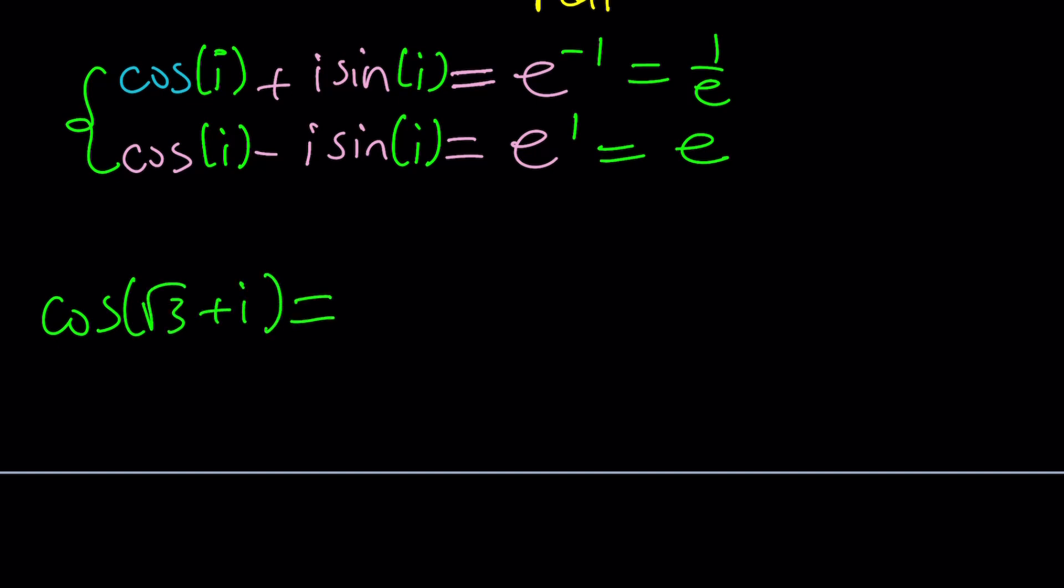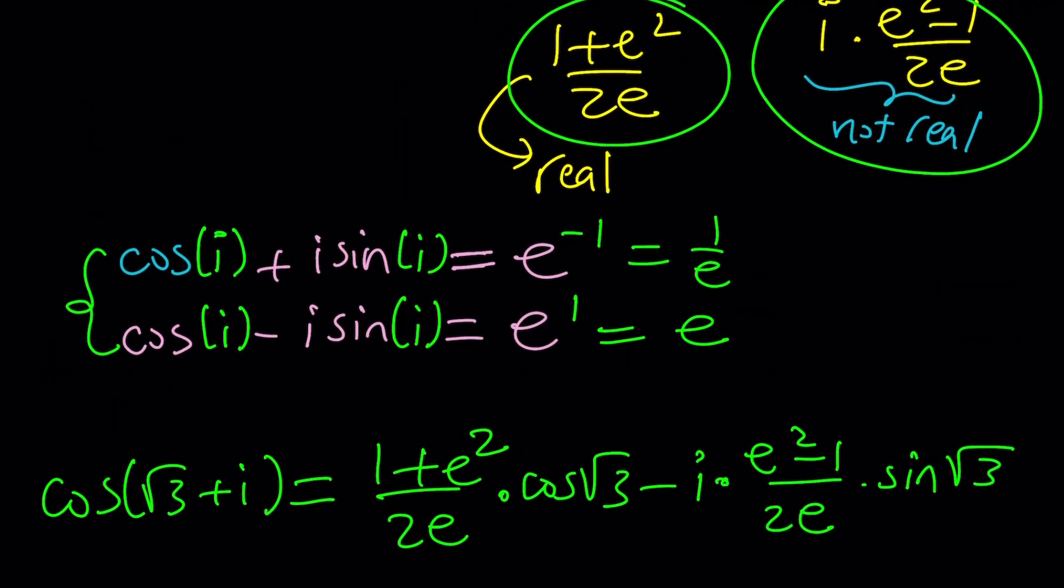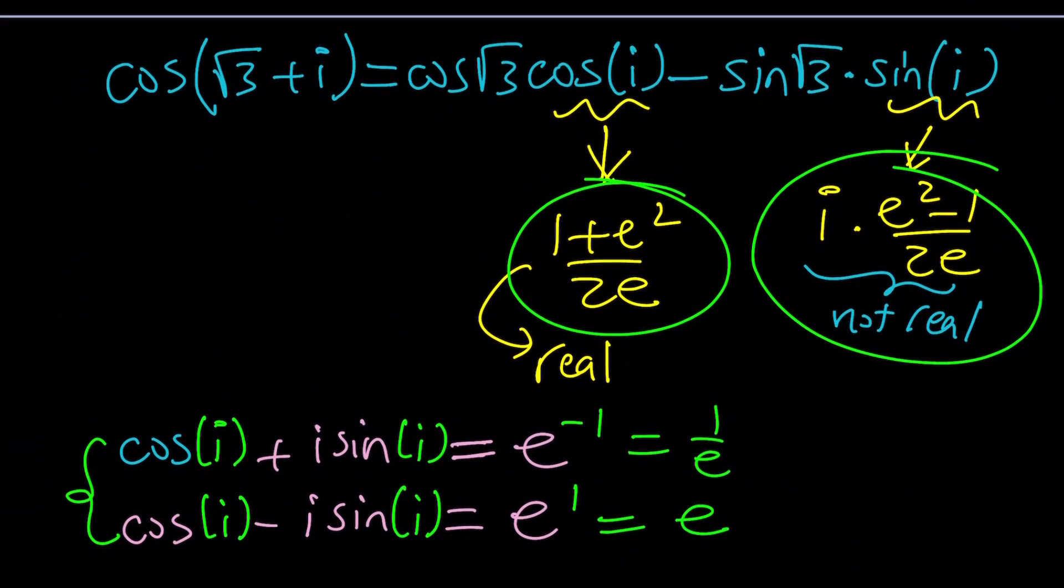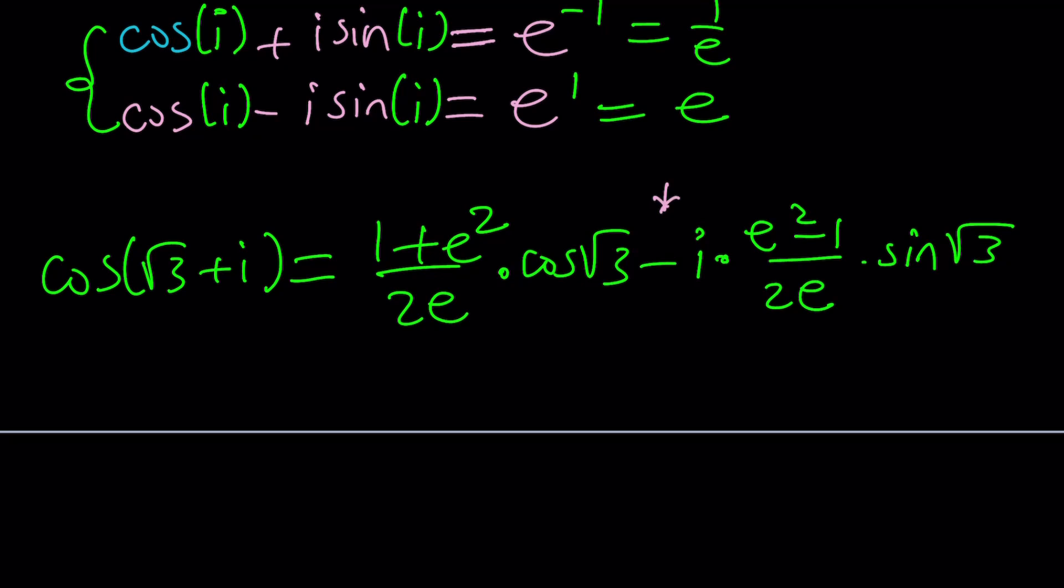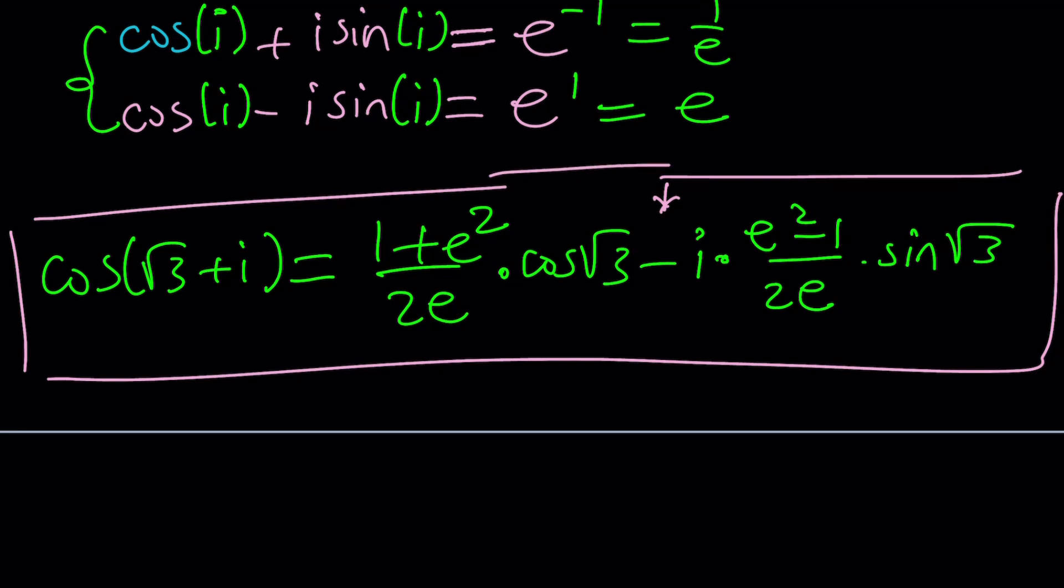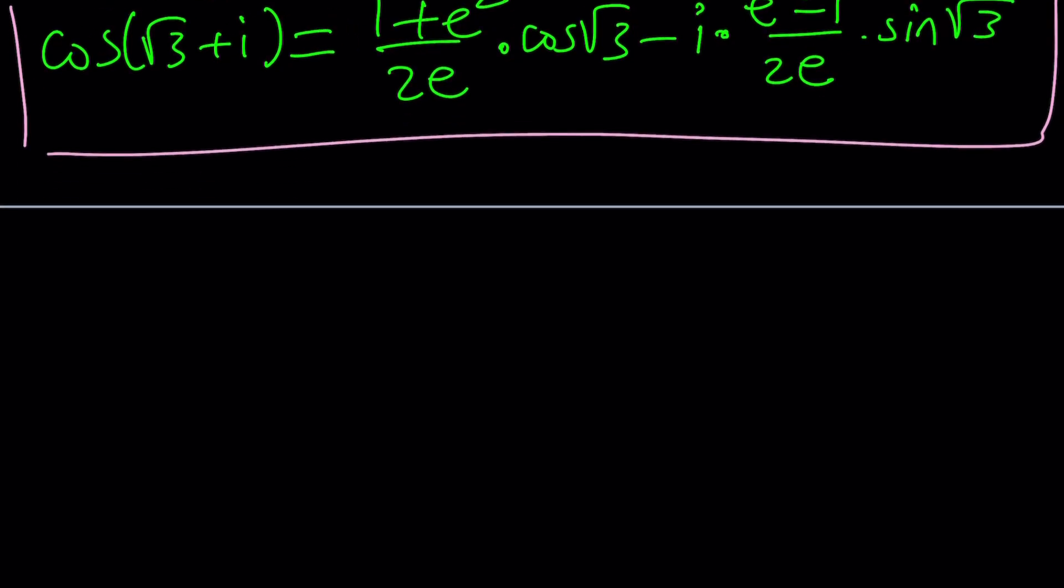So let's go ahead and plug these values into our equation and see what happens with cosine of root 3 plus i. In other words the simplest answer. So cosine of root 3 is just going to be that, and then I want to write the cosine i first, which is 1 plus e squared over 2e multiply by cosine root 3 minus i times e squared minus 1 over 2e times sine of root 3. Now where does this come from? You have an i and sine i brings another i which becomes i squared and that brings you the minus sign right here. Makes sense? That's where the minus sign comes from. But this should be the answer in the simplest form.